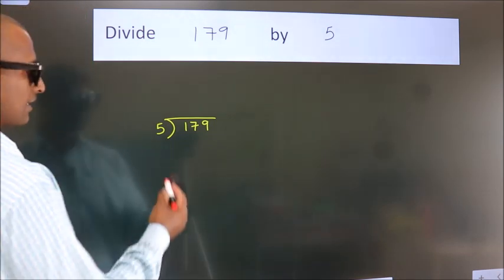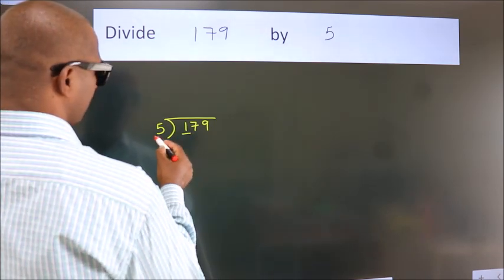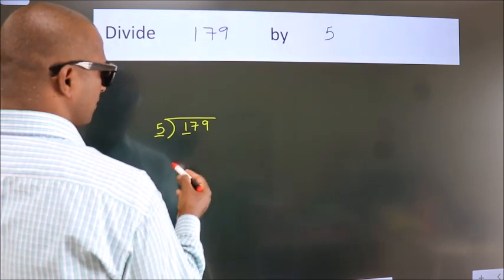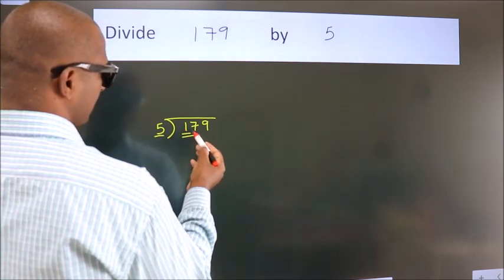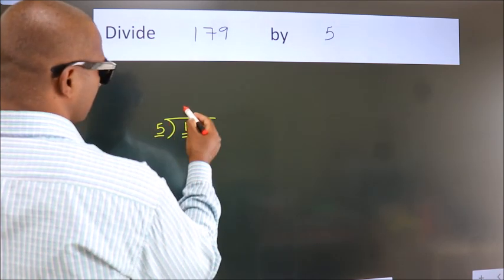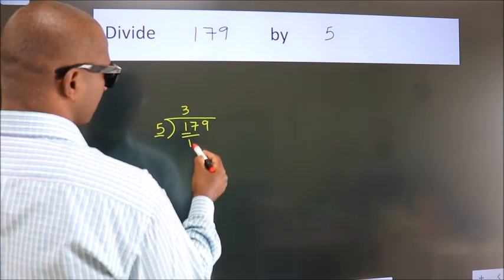Next, here we have 1, here 5. 1 is smaller than 5, so we should take two numbers, 17. A number close to 17 in the 5 table is 5 threes, 15.